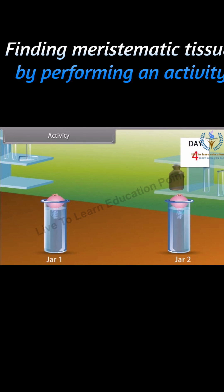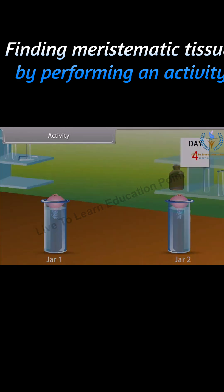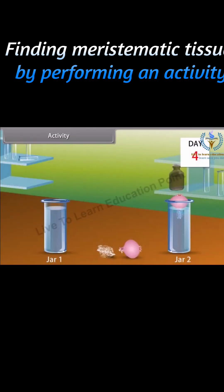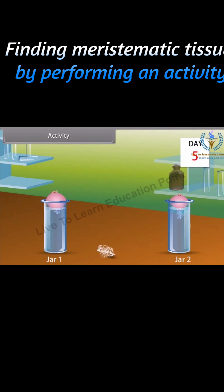Then on the 4th day, you will have to cut the roots of the onion bulb. Then again place it on the jar. On the 5th day, we will again measure the root length. On the 5th day, we find that the growth of roots of my jar has stopped.